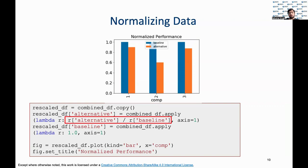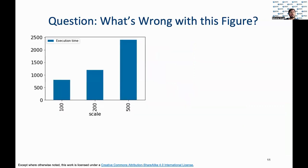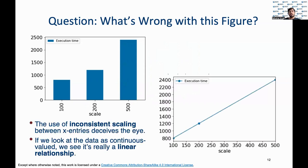Here we have used the apply function from pandas to normalize the values against the performance of the baseline. Now inconsistent scaling is a problem not just for the y-axis magnitude but also for x-axis entries. If we look at the data as continuous valued, we see it's really a linear relationship. The earlier image is deceiving because it gives a sense of improvement towards the end of the graph when, as the scale of input is increasing, the execution time is also increasing in a straight consistent linear relationship.